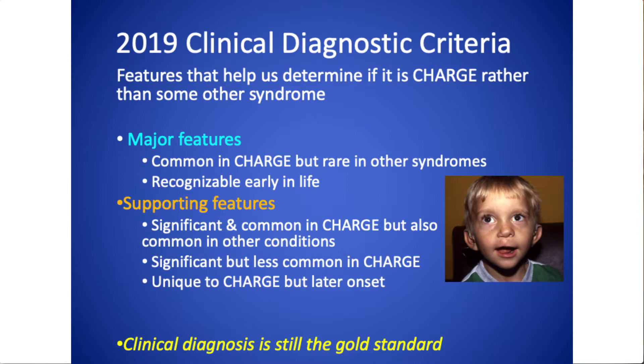When we have individuals who have multiple birth defects and problems, the question is how do we distinguish between one syndrome and another syndrome? The major diagnostic features are those which are common in CHARGE but relatively rare in other syndromes, and ones that are recognizable early in life so that we can make the diagnosis in babies and children rather than later on. Supporting features can be any number of things — sometimes things that are very significant and very common in CHARGE but also common in other syndromes, so they're less helpful in distinguishing CHARGE from similar syndromes.